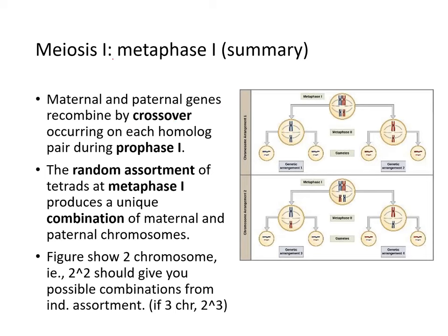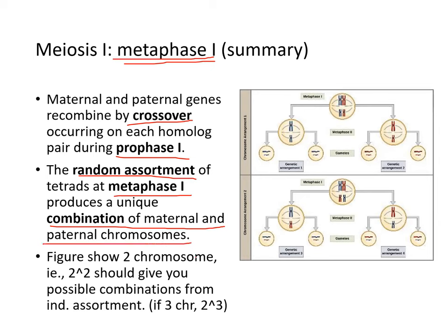Maternal and paternal genes are recombined by crossover at prophase I, and random assortment at metaphase I creates unique combinations of maternal and paternal chromosomes. For example, two different chromosome set arrangements demonstrate independent assortment, leading to four different possible gametes.